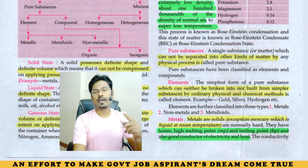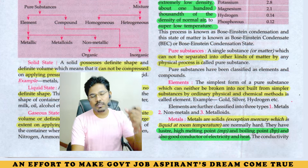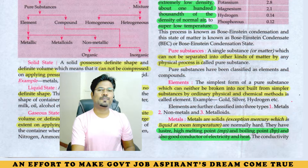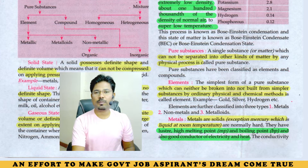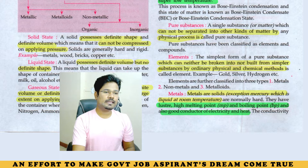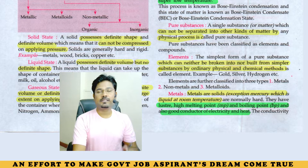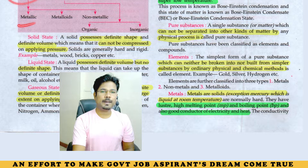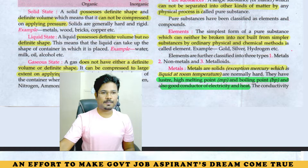An element or matter in its simplest form cannot be divided further. If you divide it, you can get a pure form of substance. Examples are gold, silver, hydrogen, etc. These elements are divided into three parts: metals, metalloids, and non-metals.